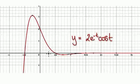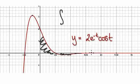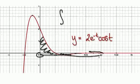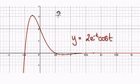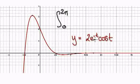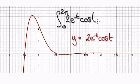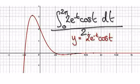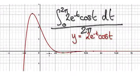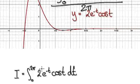To find the average distance, it really boils down to finding the area and then dividing it by this distance. Finding the area means computing the integral from 0 to 2π of 2e^(-t) cos(t) dt, and then dividing by 2π — that gives the average distance. Since 2 is a constant, take it out.